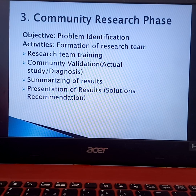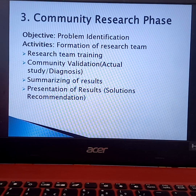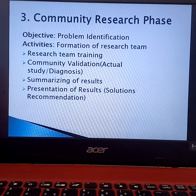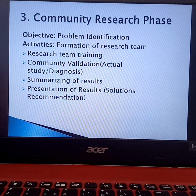In the prioritization of community health nursing problems, there are five criteria: the nature of the problem, the magnitude of the problem, the modifiability of the problem, preventive potential, and the social concern. If you don't know yet about these topics, kindly access the video on the prioritization of nursing problems in the community — I have already made a video about that.